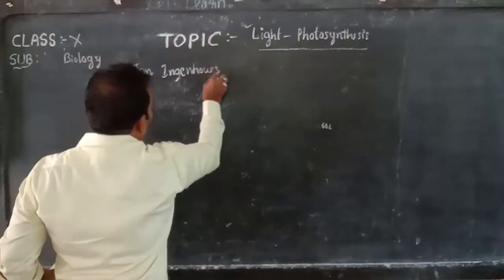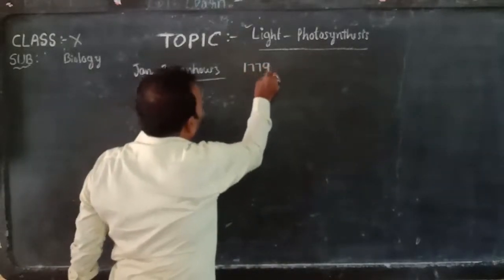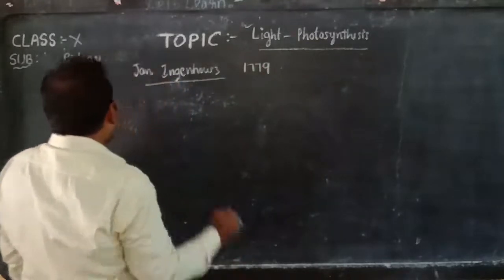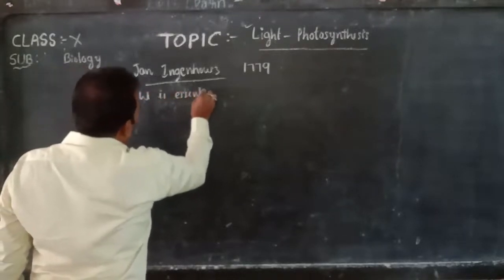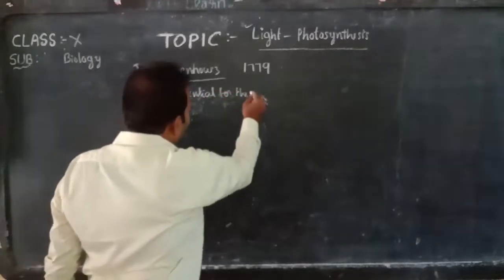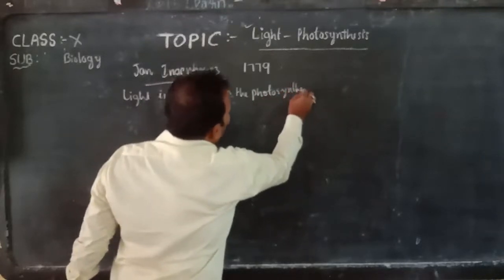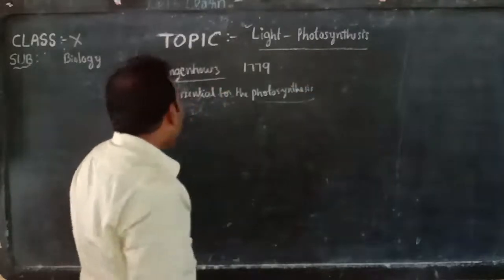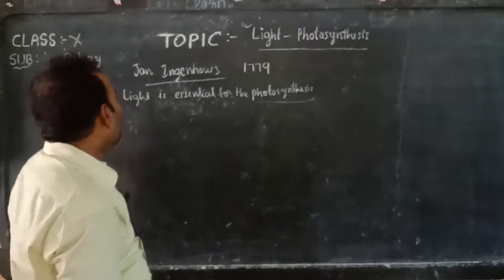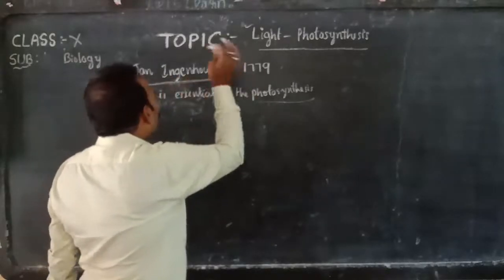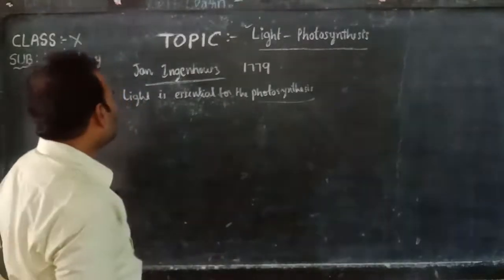John Ingenhaus conducted the experiment in the year 1779 and proved that light is essential for photosynthesis. He also found that oxygen is released during the process of photosynthesis, only in the presence of sunlight.